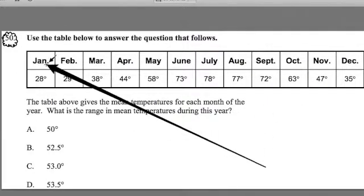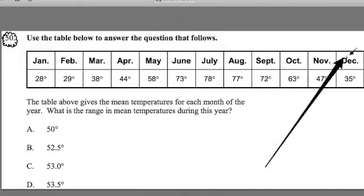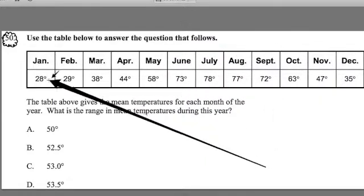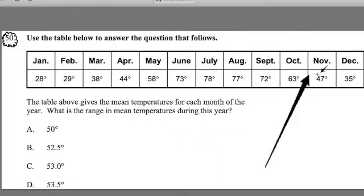We see it says it gives us the months of the year and it gives us actual inputs, data points. Data point is a piece of information, a number value that has meaning. So we have all these data points here. And then we're asked a question.